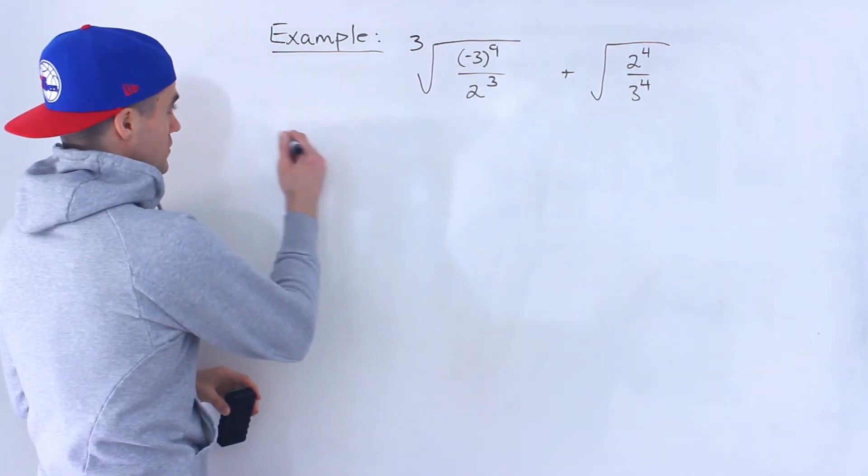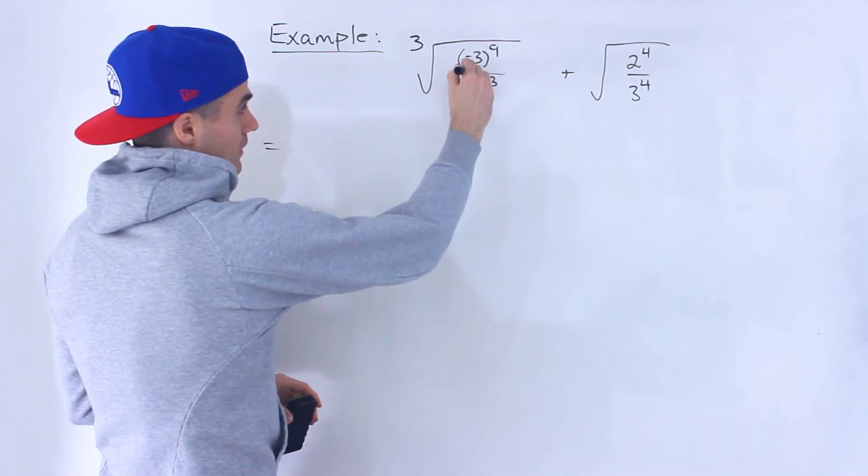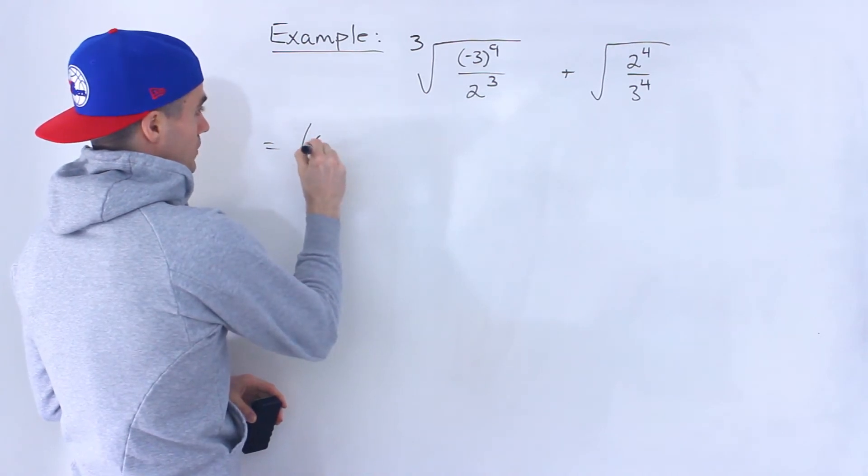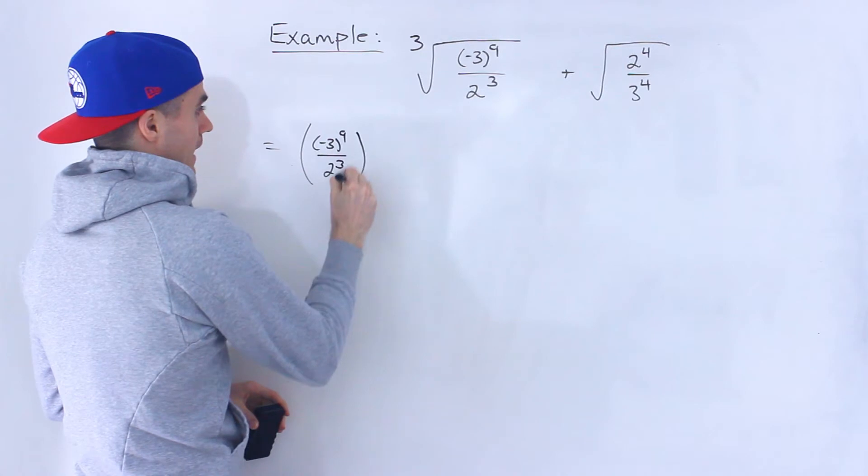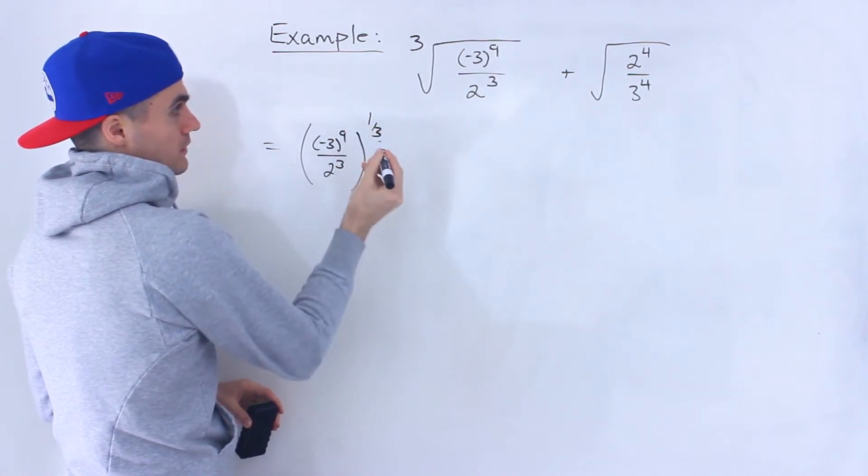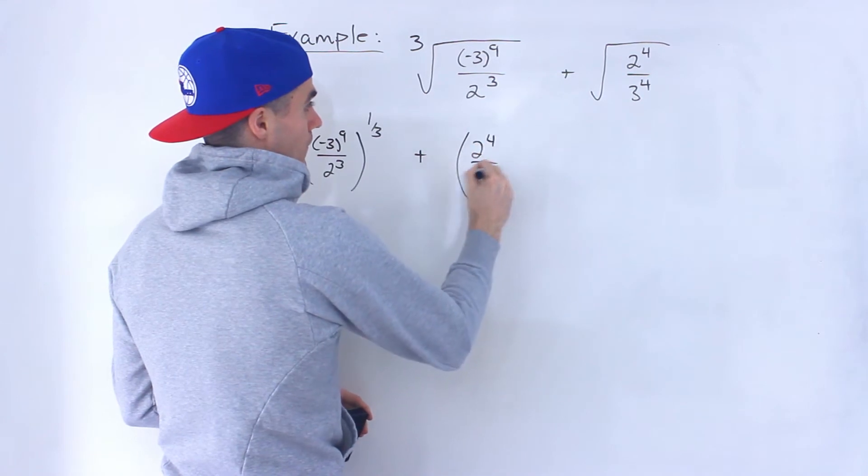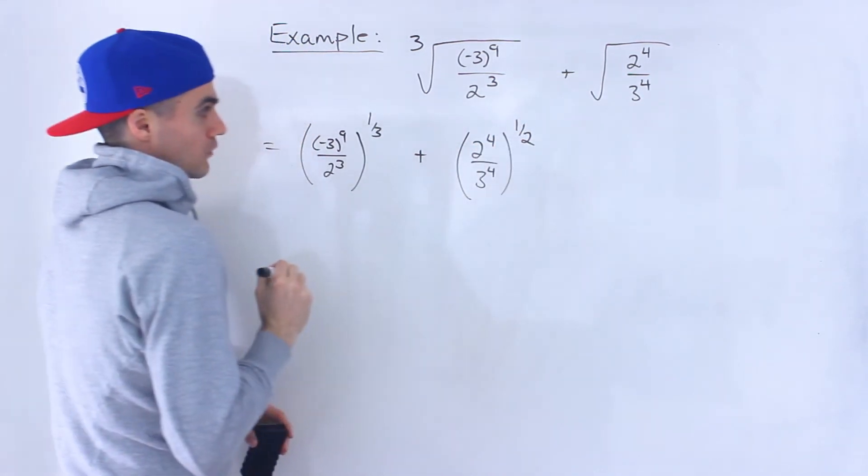What I'm going to do first, before doing anything within here, is take this third root and rewrite it as to the power of 1 over 3. And then same thing with the square root - I'm going to keep the inside the same and write that to the power of 1 over 2.